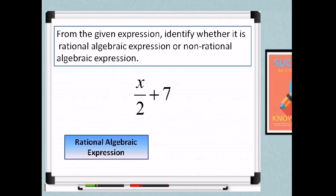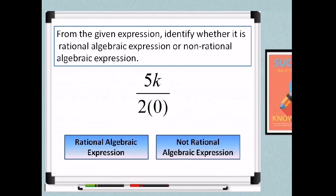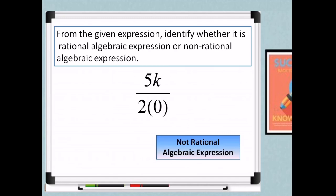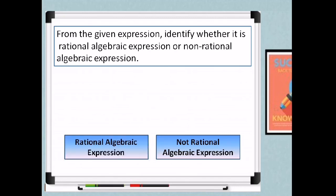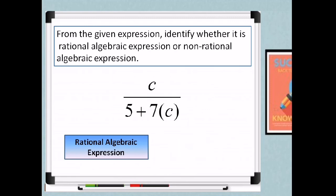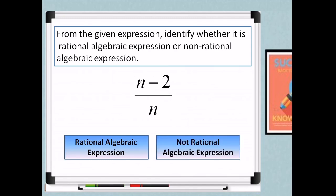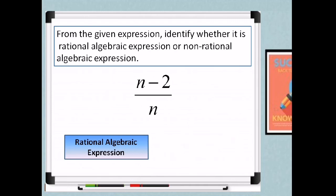The correct answer is rational algebraic expression. Second: 5K over 2 times zero — that is a rational algebraic expression. Third: c over 5 plus 7 times c — that is a rational algebraic expression. Fourth: n minus 2 over n — that is a rational algebraic expression.